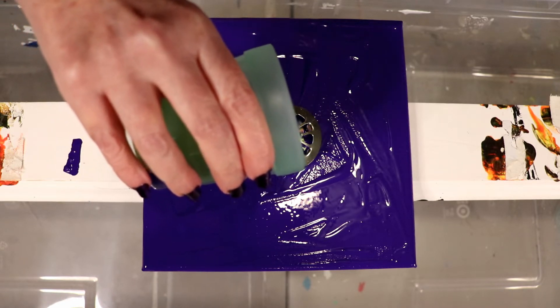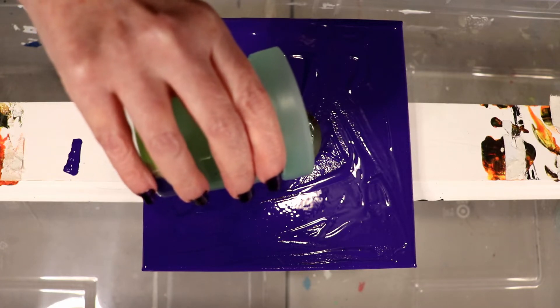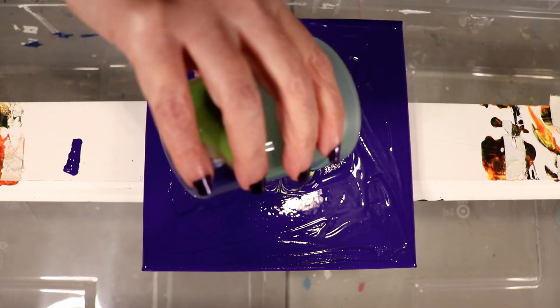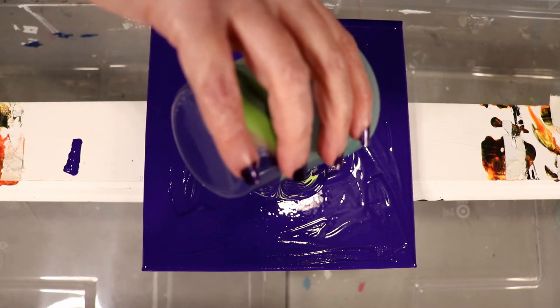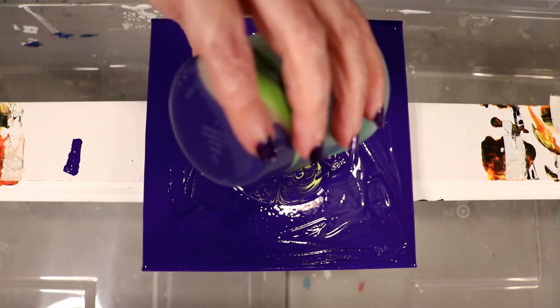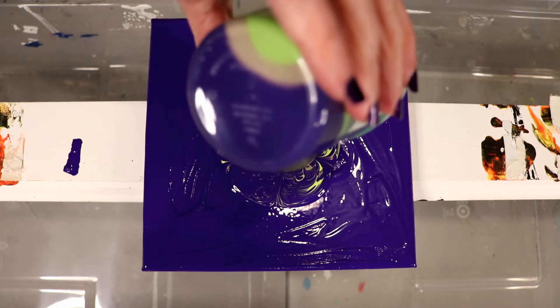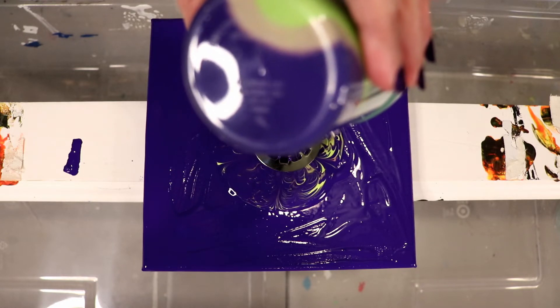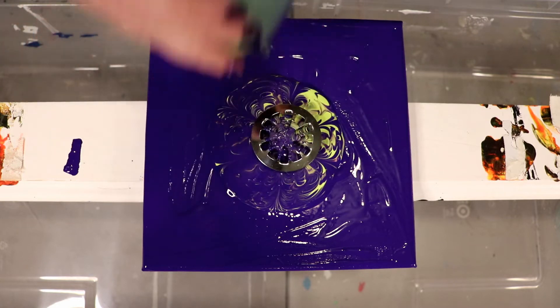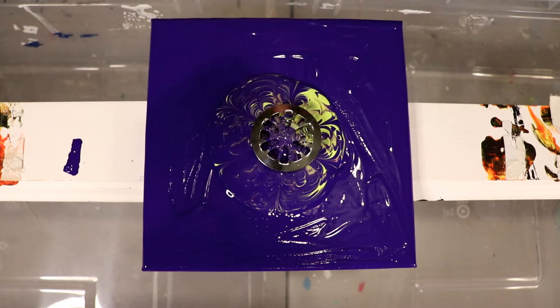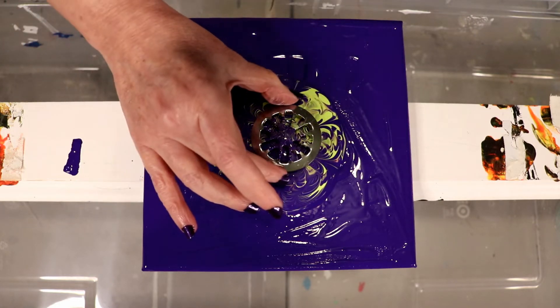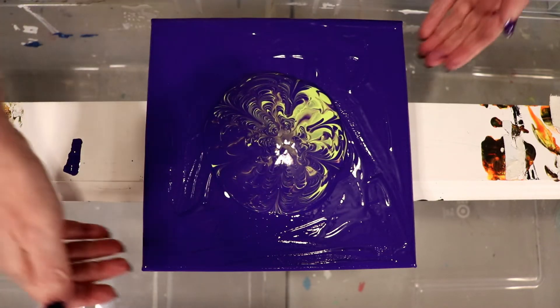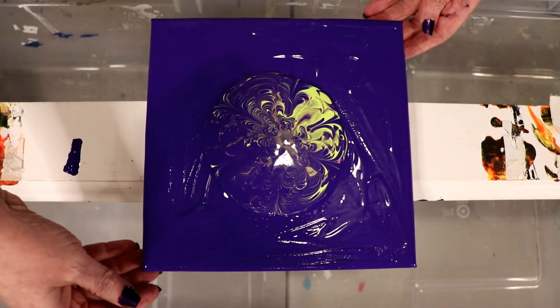We're just going to pour it over the strainer and just let it go. One thing I am noticing, the separation of the paints in the cup is maintaining itself a lot better than what we had. That's definitely enough paint. All right, I'm going to take this off and try pulling and stretching this and seeing what we get. And if we need to, I will do more paint.